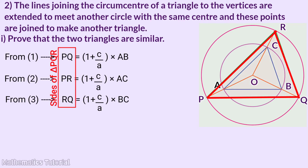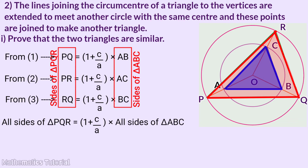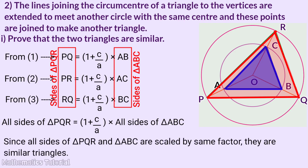PQ, PR, RQ are sides of triangle PQR, and AB, AC, BC are sides of triangle ABC. All sides of triangle PQR equal 1 plus C by A into all corresponding sides of triangle ABC. Therefore, triangle ABC and triangle PQR are similar triangles. Second question: prove that the scale factor of the sides of the triangle is the scale factor of the radii of the circles.